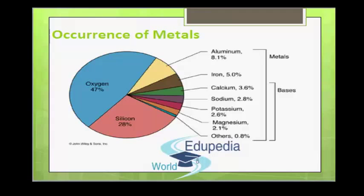The relative abundance of elements in the earth's crust is shown in this pie chart, showing the percentages of the 12 most abundant elements. Oxygen is the most abundant element in the earth's crust, the next most abundant being silicon, followed by aluminium.